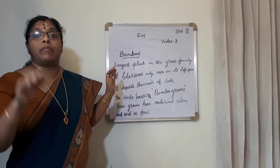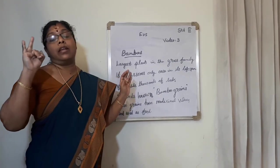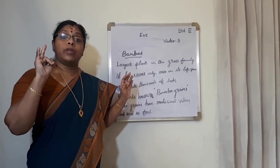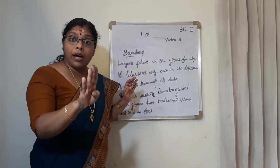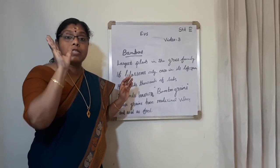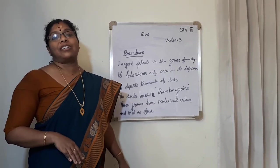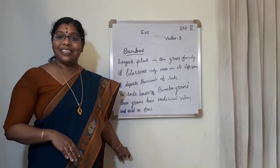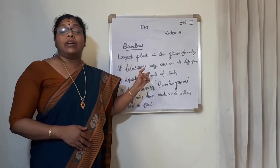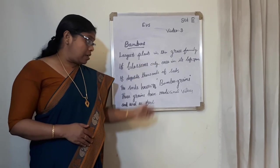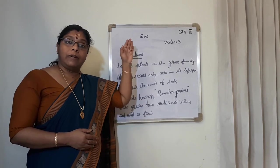Bamboos are from the grass family. They bloom once in their lifespan. They deposit thousands of seeds. These seeds are known as bamboo grains. And these bamboo grains have medicinal value and are used as food. Copy this to your notebook — I will send the photographs and the page photograph also.